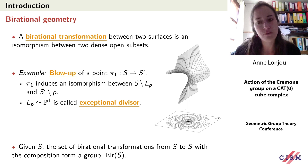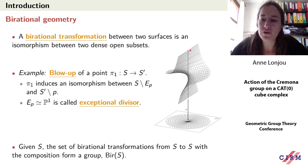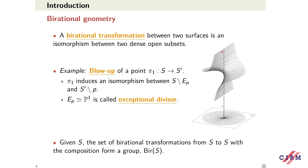An important notion we will focus on throughout the talk is a blow-up. We blow up a point p in a surface S to get a surface S'. This means we have a morphism from S' to S which contracts a line isomorphic to P1 to the point p, and is an isomorphism outside. This line is called the exceptional divisor. Two lines crossing at p will be separated above it.